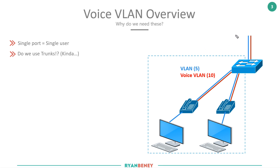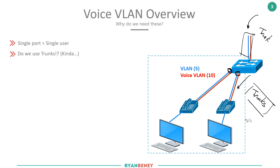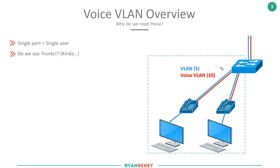Looking at this diagram, you might think the upstream link is a trunk — and you'd be right, because multiple VLANs are being passed along that cable. You might also think the downstream ports toward the clients are trunks, since they're carrying multiple VLANs. But best practice down to clients is access mode, because we want traffic to be untagged and only a single VLAN going to the client. In this case, though, there are two devices on the end of the switch: the phone and the PC.